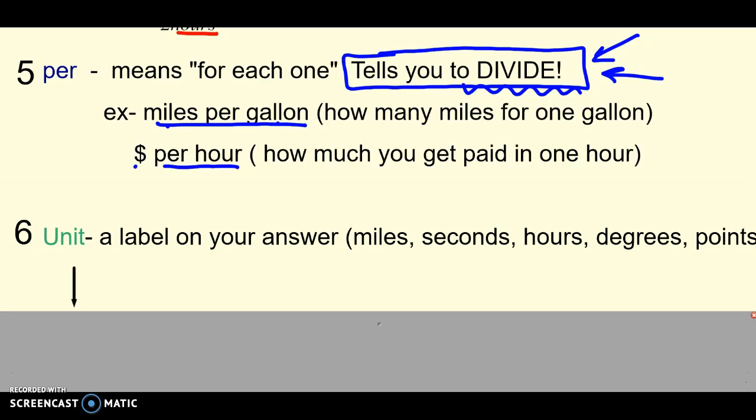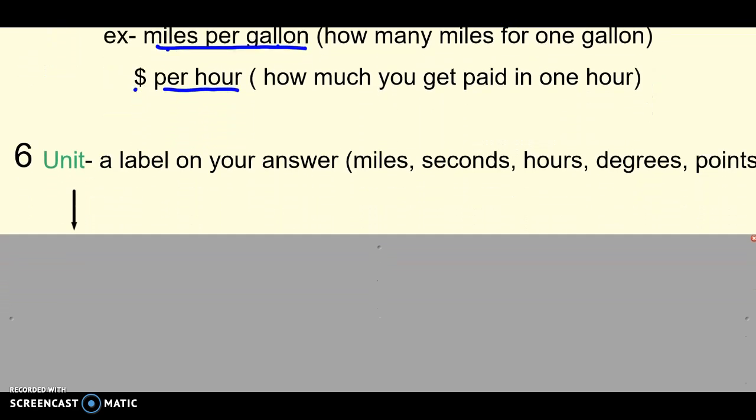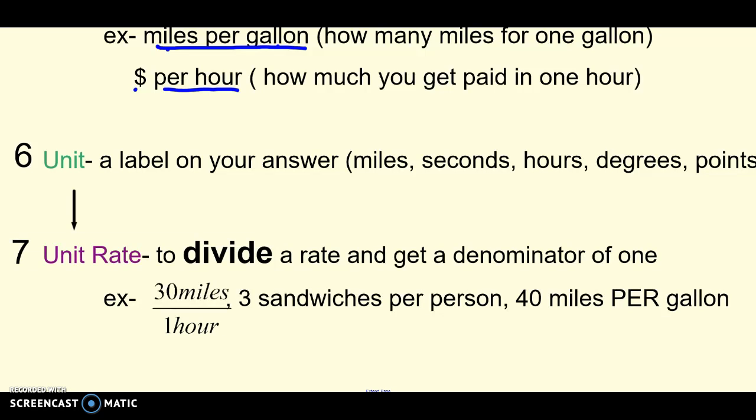Number six, a unit. A unit is usually just a label on your answer. Miles, seconds, hours, degrees, points, girls, boys, students, teachers, cats, dogs. Anything that I use to label my answer. But it has another meaning, and that's part of the seventh vocab word.